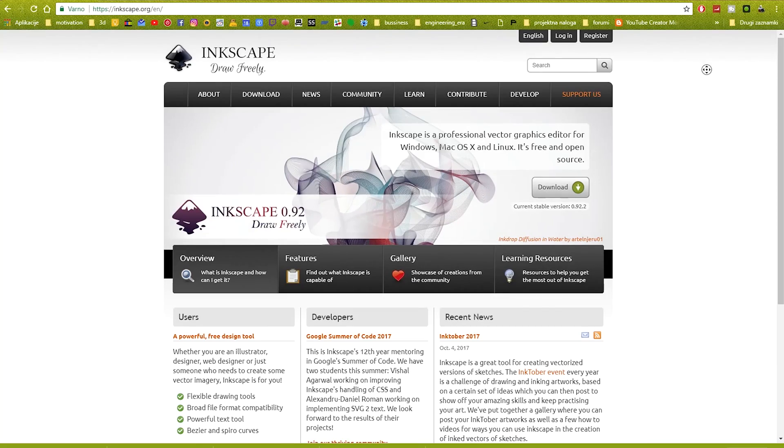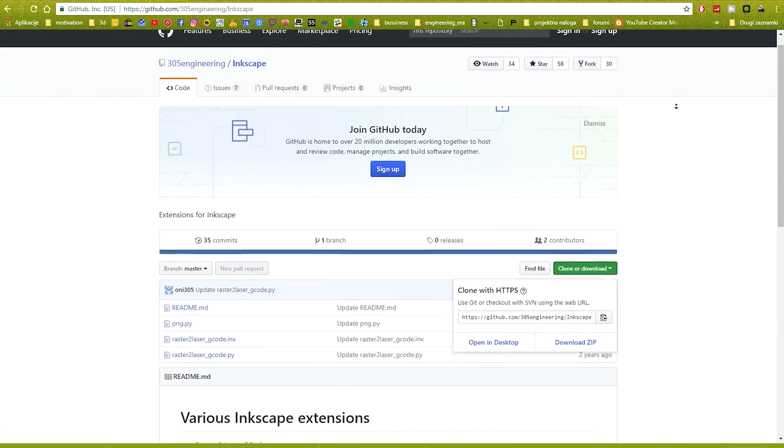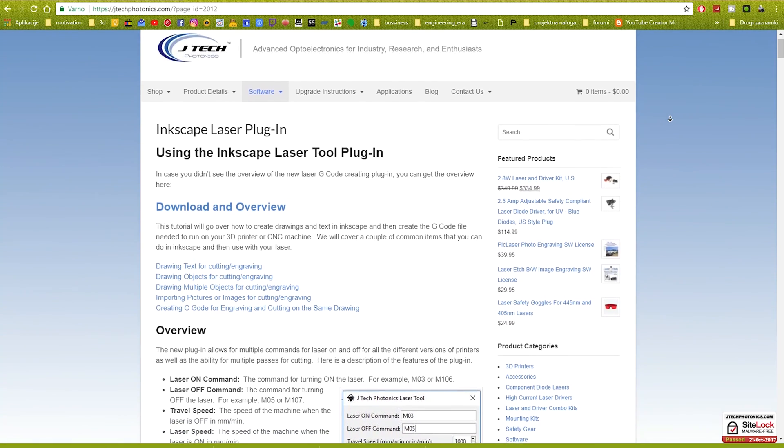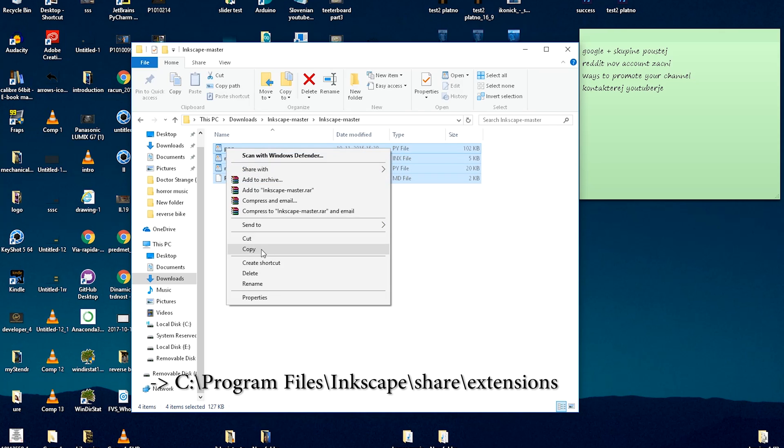Let's hop to the computer and download the needed software for engraving. Download Inkscape software and two plugins for laser engraving. I'll put all those links in the description below. After installing Inkscape, extract both plugins and copy the content to the written location.